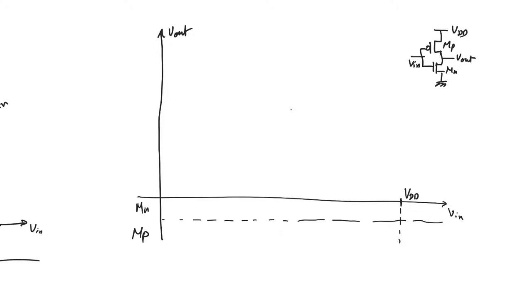There are two points on the VTC that we already know: the point (V-output low, V-output high) and the point (V-output high, V-output low). So when the input is V-output low, which is 0V, the output is VDD. We know that this point (0, VDD) is on the VTC. We also know that when the input is VDD, the output is 0V, so that other extreme point is also on the VTC.